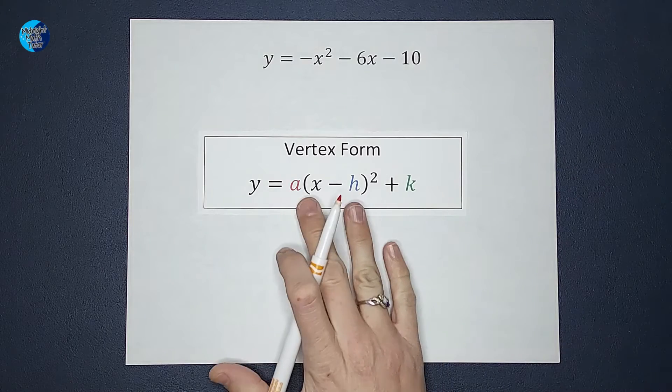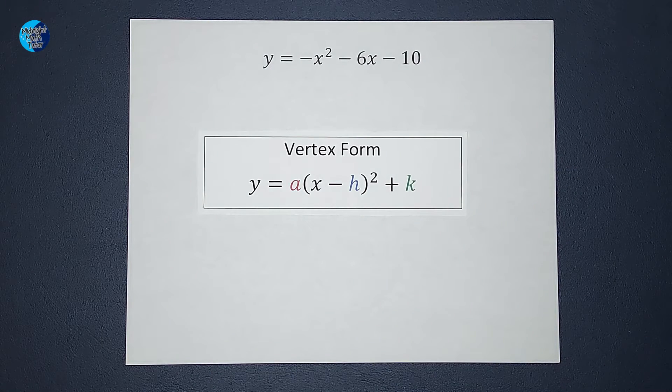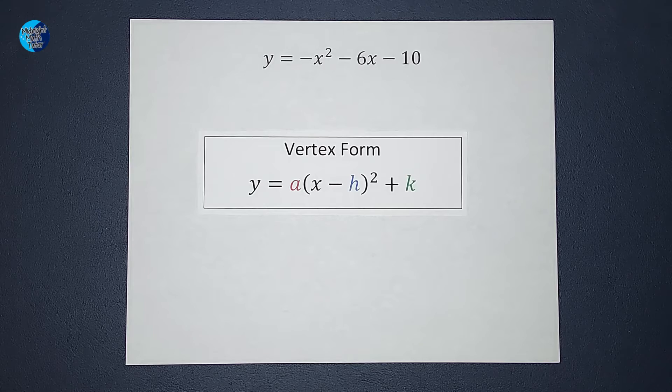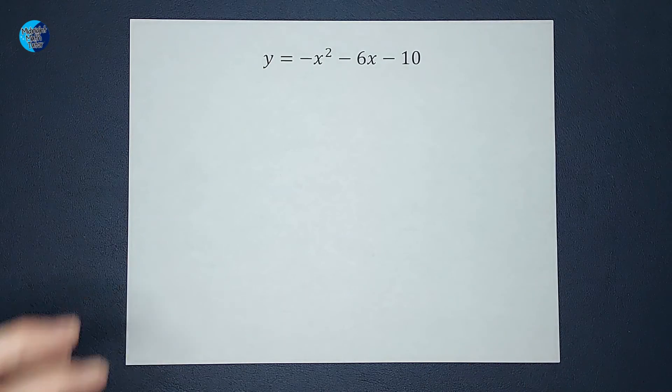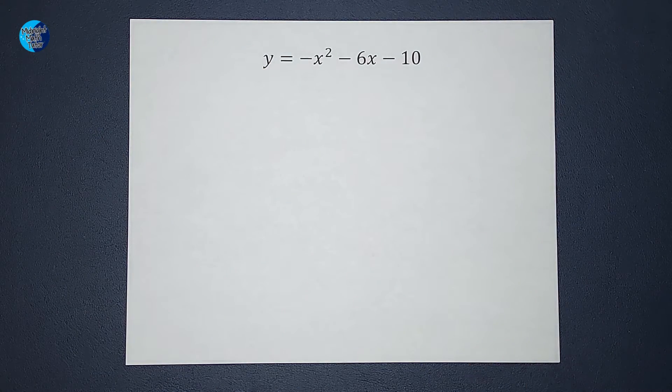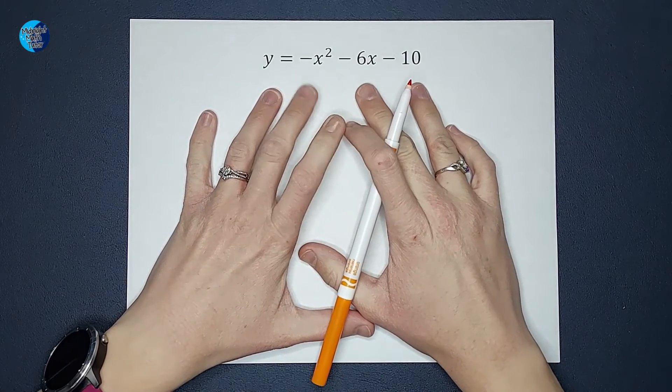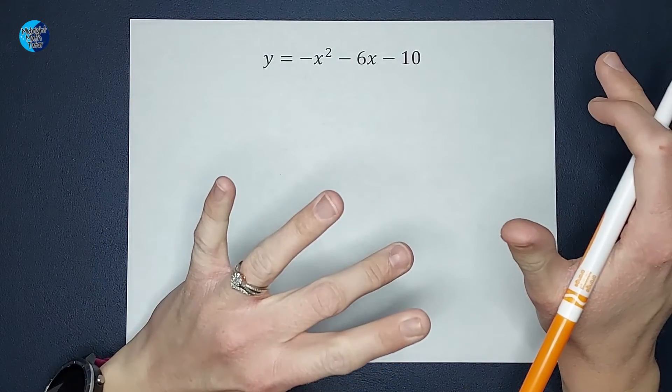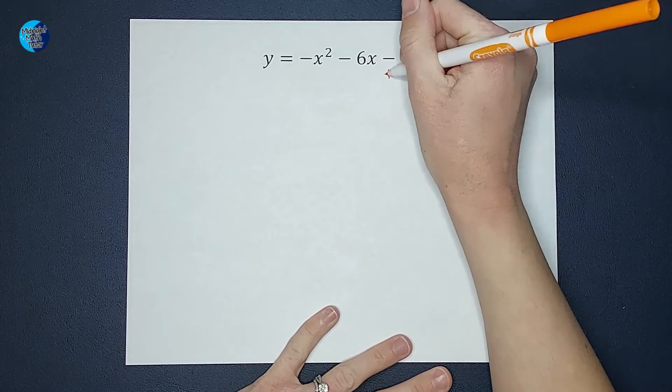So to get here, I want parentheses squared. And the way to get that is to complete the square. So to complete the square here, the first thing I'm going to do is I want to get the x's by themselves on one side of my equation. So I am going to add 10 to both sides.